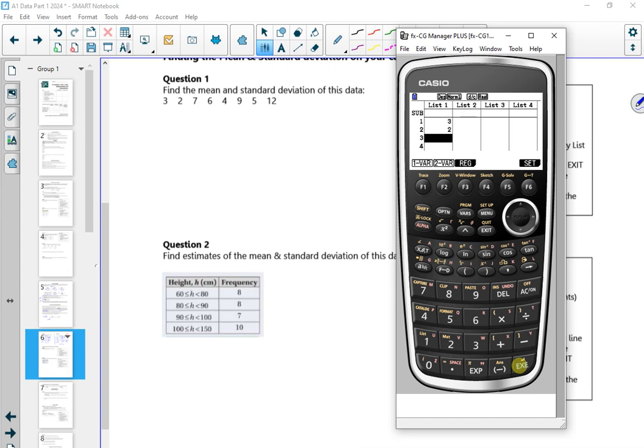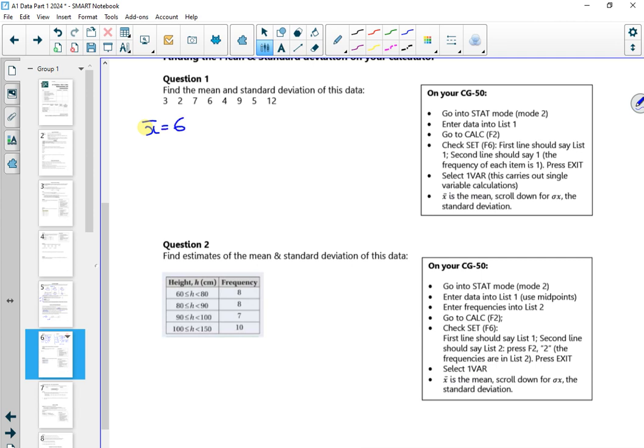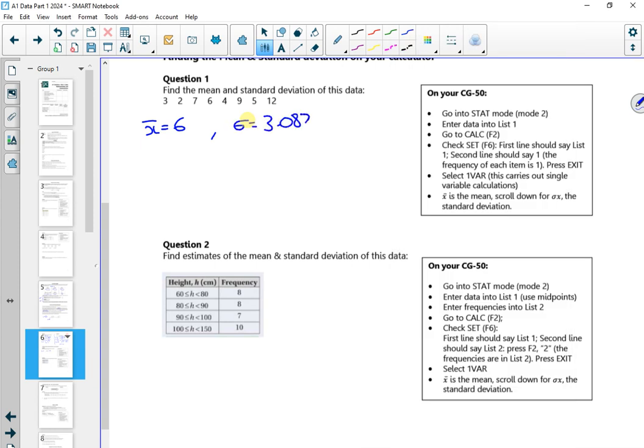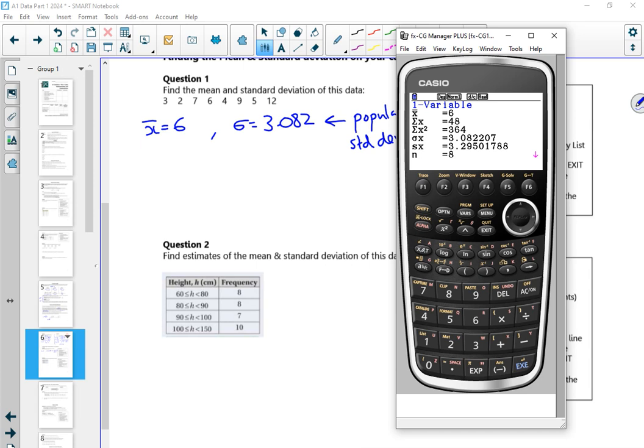So I'm going to put a 3, a 2, a 7, a 6, a 4, a 9, a 5, and a 12. And then just do F1 for one bar. So that tells me that X bar is 6. Now on your calculator, there's lots of different summary stats in there. It gives me a sigma X as 3.08 and an SX as 3.295. The sigma is the one we want. Now that really is the population standard deviation whereas the S is the sample standard deviation. In fairness, you could use either value, but ideally stick with sigma.